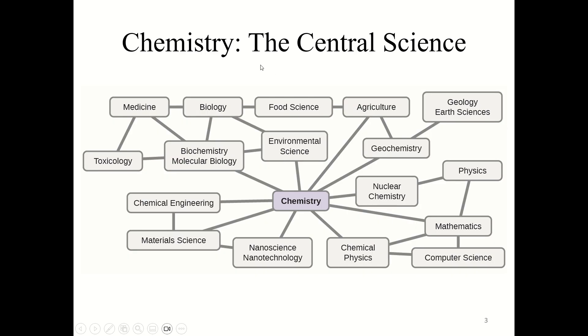Chemistry is often termed the central science. Understanding chemistry is helpful to unlocking and understanding a variety of different fields: biochemistry, environmental science, geochemistry, agriculture, nuclear chemistry, physics. Chemistry is directly related to mathematics, chemical physics, nanoscience, materials science, chemical engineering. It has a hand in toxicology, medicine, biology, food science. Chemistry is a major player in STEM. Almost every STEM field requires some understanding of chemistry in some way.